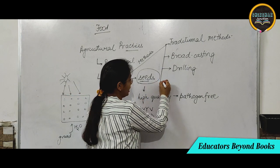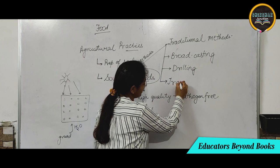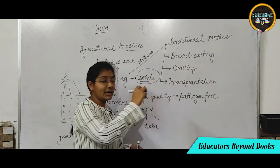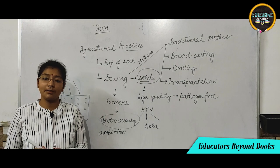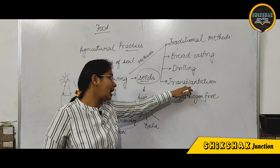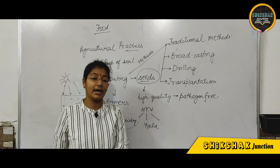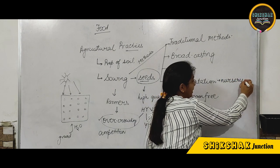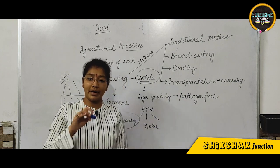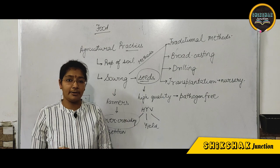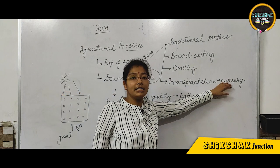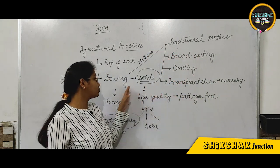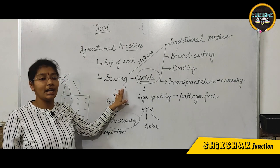Another modernized method is transplantation. In transplantation, plants are first grown in nurseries until they grow up — like bonsai plants at home. Then these seedlings are transplanted into the main field, where they grow into whole plants. These are the sowing methods applicable in our fields.